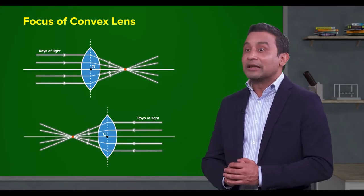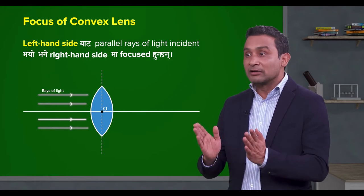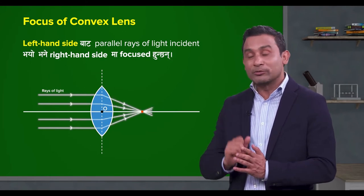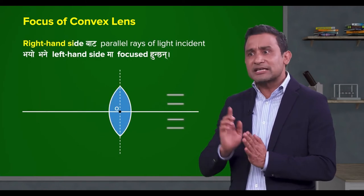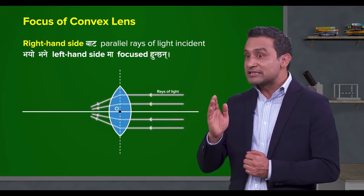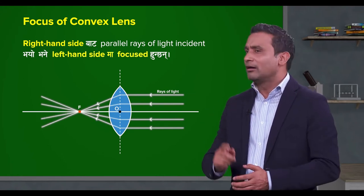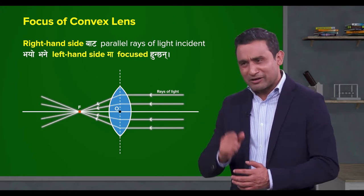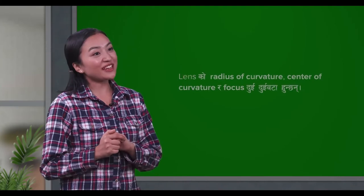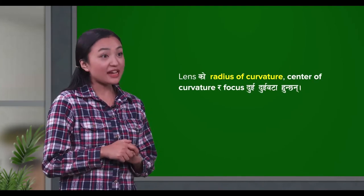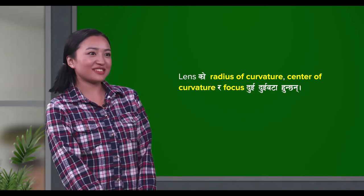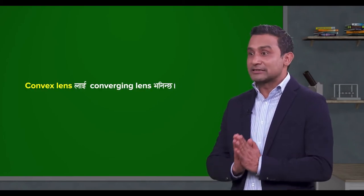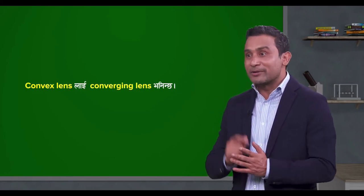Oh, that's right. If parallel rays of light are incident from the left hand side, they focus on the right hand side. And if parallel rays of light are incident from the right hand side, they focus on the left hand side. That's why convex lens has two foci. Oh, teacher, I understand. The lens has two radii of curvature, two centers of curvature, so it also has two foci. Very good.